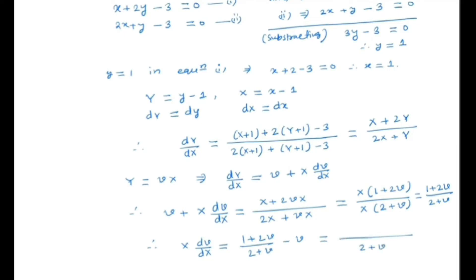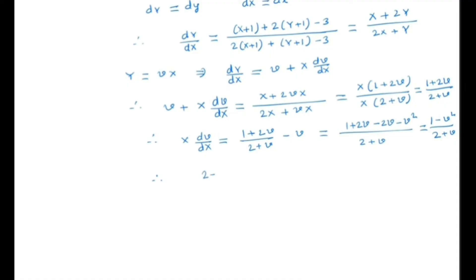So X dv/dX = (1 + 2v)/(2 + v) - v, which simplifies to (1 + 2v - 2v - v²)/(2 + v) = (1 - v²)/(2 + v). We get a separable differential equation. Separating v and X: (2 + v)/(1 - v²) dv = dX/X.